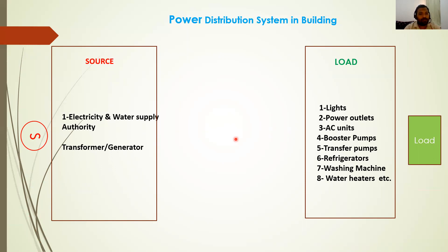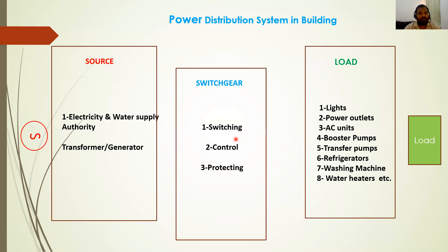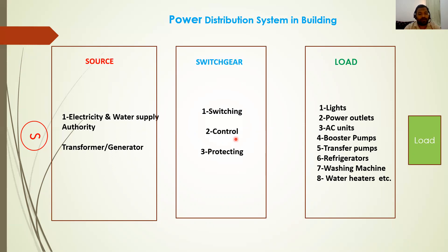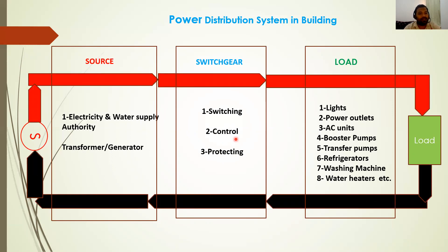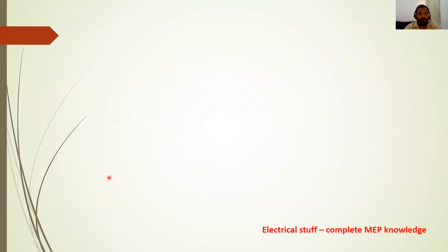In between the source and load we need a mechanism to control, switch, and protect these loads. This part is called the switchgear system — it is an intermediate between the source and the load. Power flows from the source through the switchgear to the load and returns back, completing the cycle.